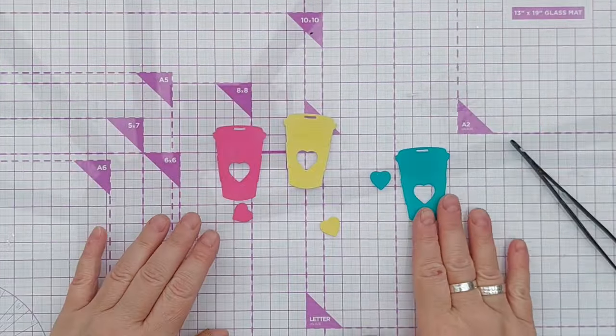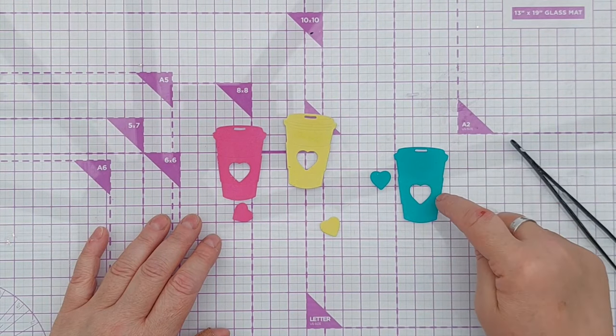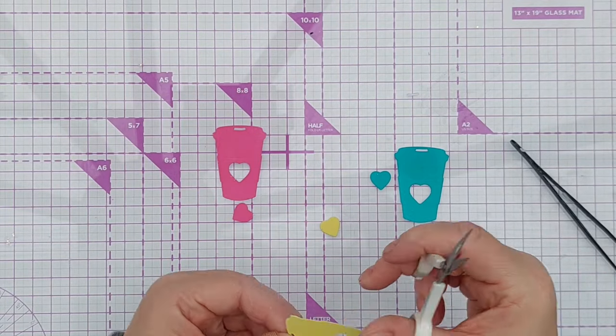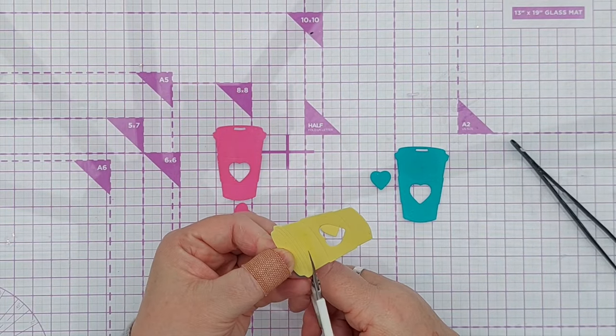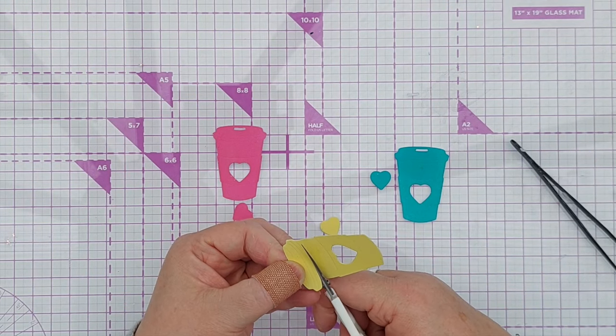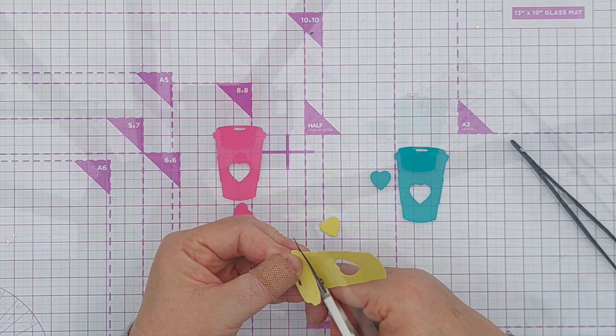Okay so I'm thinking blue cup, yellow lid, yellow sleeve, pink heart. What I have to do with these is cut them out, but fortunately there are embossed lines to follow which makes it really easy.